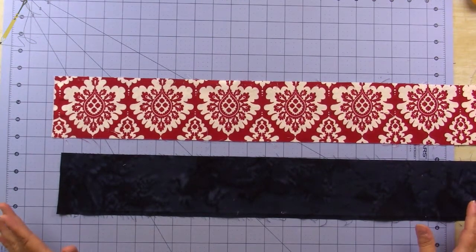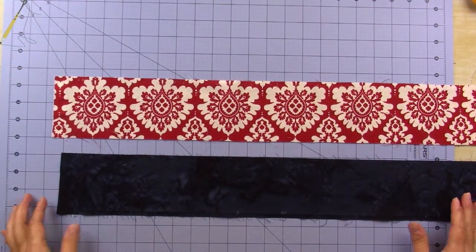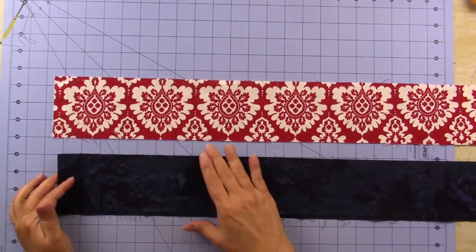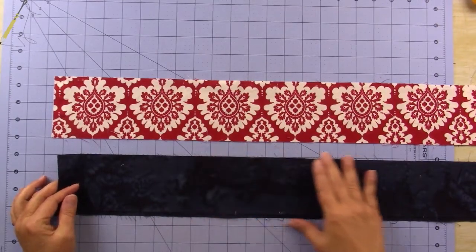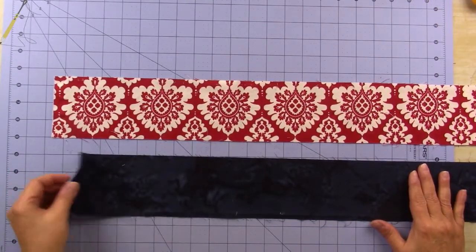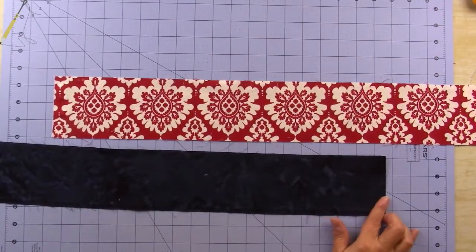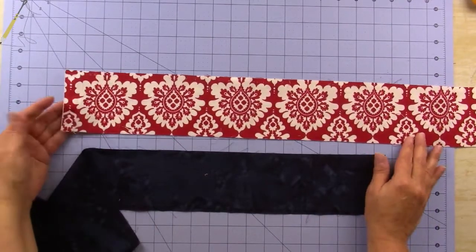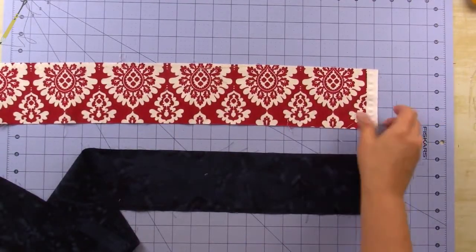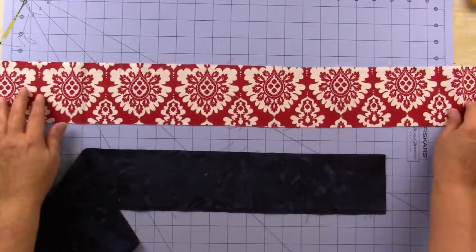This is very basic strip piecing. What you do for strip piecing is you cut fabric the width of the fabric bolt from selvage—this is a selvage on this side and all the way over here is the other selvage. Same thing with this one, all the way over here is the other selvage.